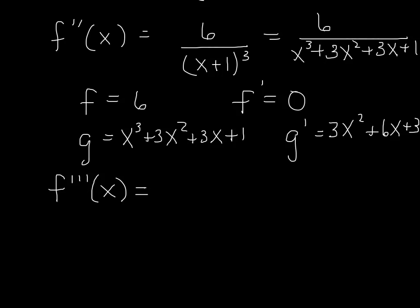Okay, so we start again with the second function times the derivative of the first. And again, since we're multiplying by 0, that's just going to give us a nice 0.